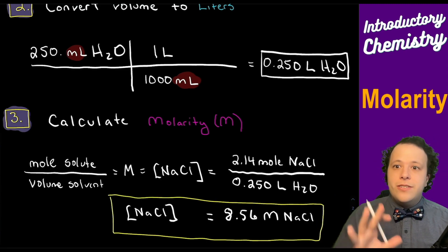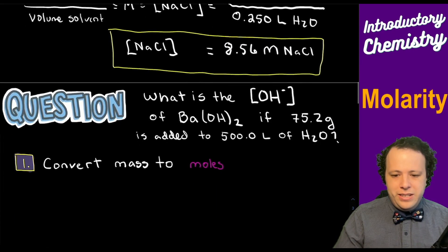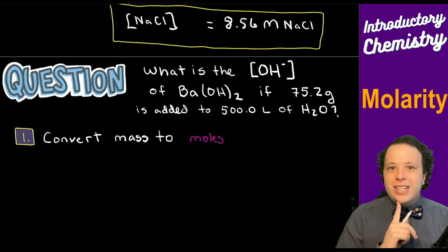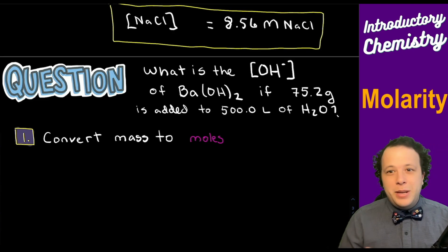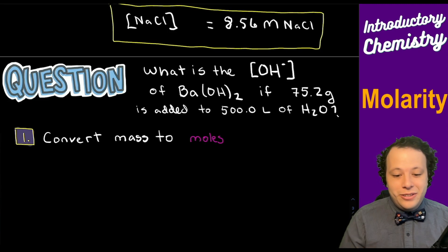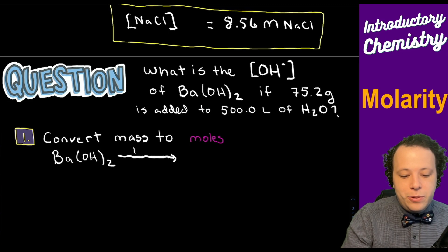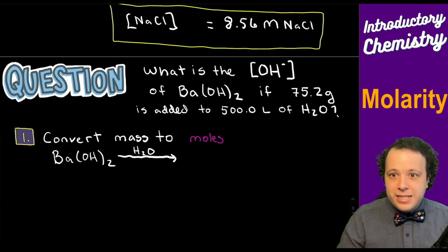Let's try another. What is the concentration of hydroxide from barium hydroxide if 75.2 grams is added to 500 milliliters of water? Acid-base chemistry is a big part of concentrations and solutions. We first need to understand what the chemical formula looks like when added to water — how does the solubility work? Barium hydroxide breaks down into one Ba²⁺ ion and two hydroxide ions.